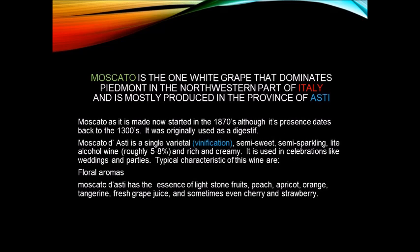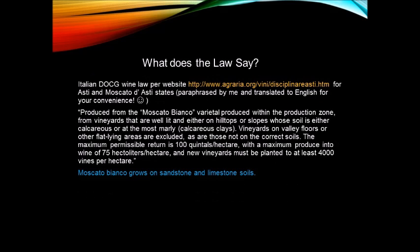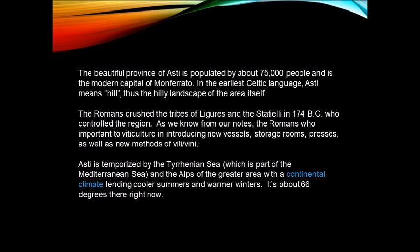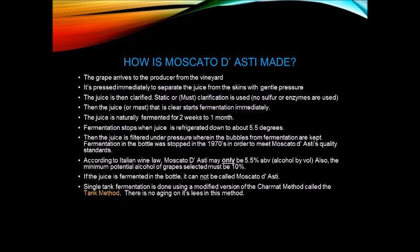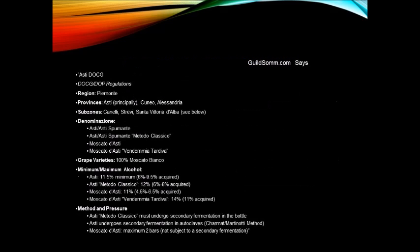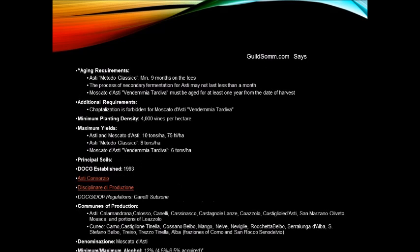Now we move on to the Loire Valley. Location: from western France along the Atlantic to the center of the country along the Loire River — it has four sections: Nantes, Anjou-Saumur, Touraine, and Central Vineyards. Climate changes from maritime to continental over the terrain.